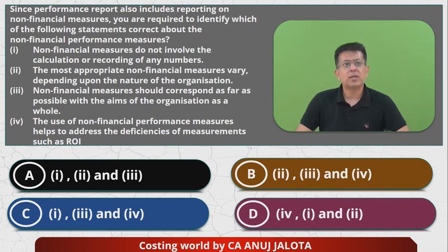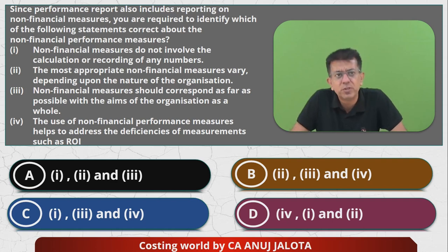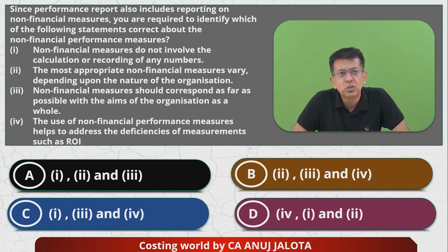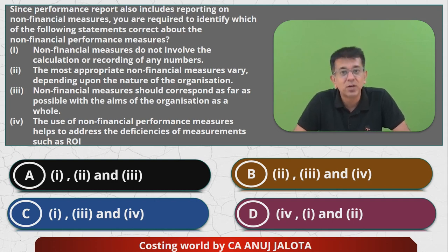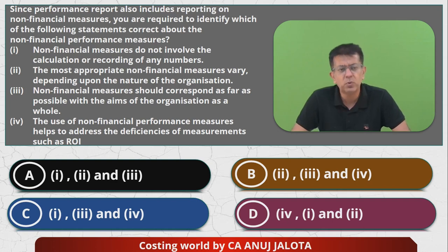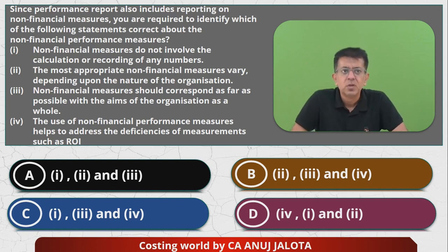Let's introspect one by one. Point one: non-financial performance measures do not involve calculation or recording of any numbers. This is actually incorrect — they can definitely involve calculation. For example, labor turnover requires computing a figure. So point one is wrong.